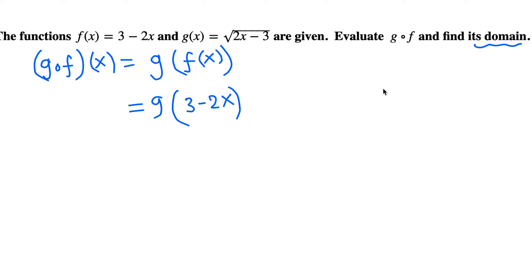We are asked to find the domain, so we need to see if this function is undefined somewhere. But 3 - 2x is a degree 1 polynomial, so it is defined for all values of x. There is no restriction, so all values of x are good. We don't have anything from here.